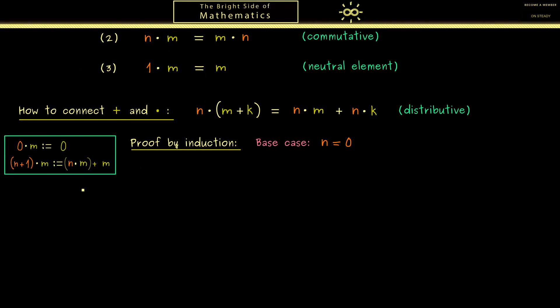Now for the base case let's calculate the left hand side and the right hand side where we put in 0 for n. Here 0 times any natural number is simply defined as 0. Similarly on the right hand side we have 0 plus 0, and of course by the definition of the addition this is also 0. Now since the left hand side is equal to the right hand side the base case is finished.